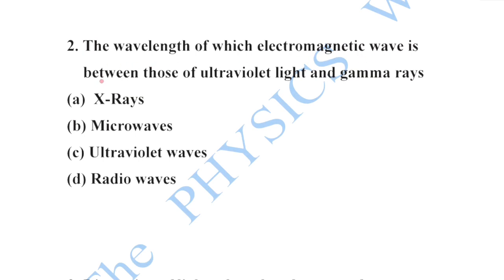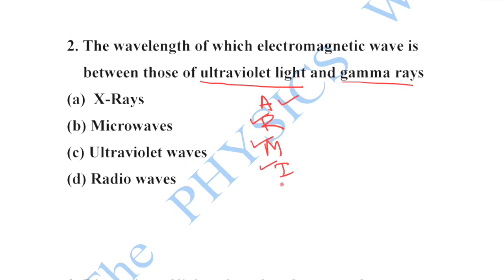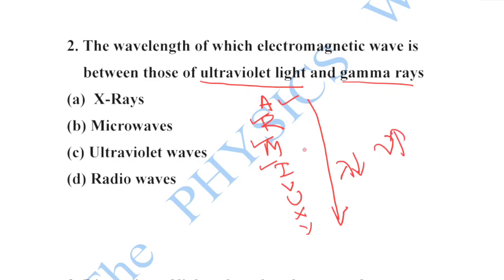Next: the wavelength of which electromagnetic wave is between those of ultraviolet light and gamma rays? You should remember the order of electromagnetic waves — radio waves, microwaves, infrared, visible, UV, X-rays, then gamma rays. This is in decreasing order of wavelength or increasing order of frequency. So between ultraviolet and gamma rays there are X-rays. Option A is your correct option.